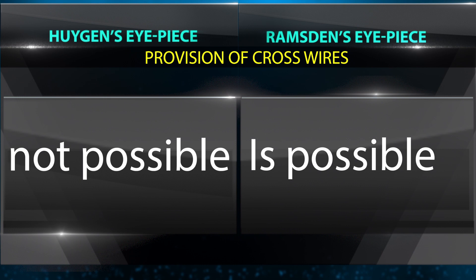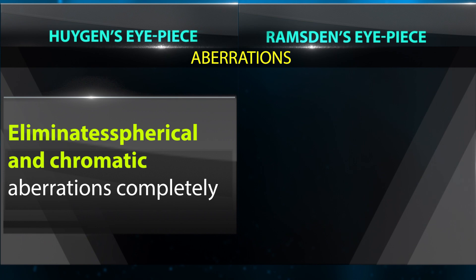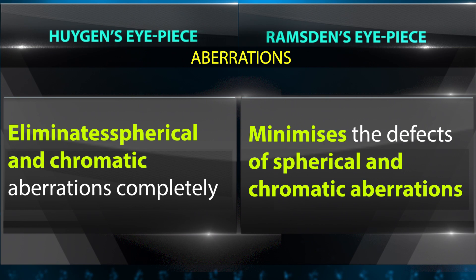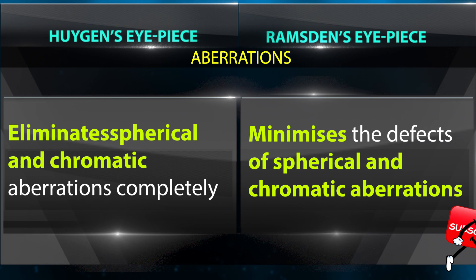Regarding aberrations: the Huygens eyepiece eliminates spherical and chromatic aberrations completely. The Ramsden eyepiece only minimizes the defects of spherical and chromatic aberrations.